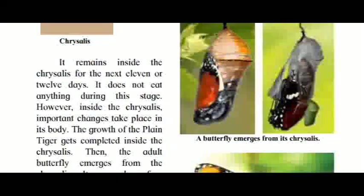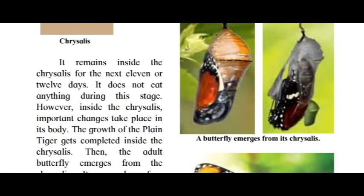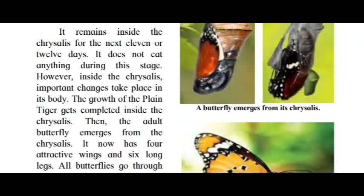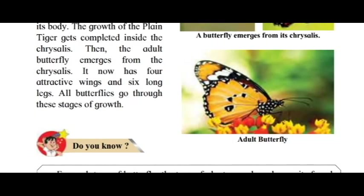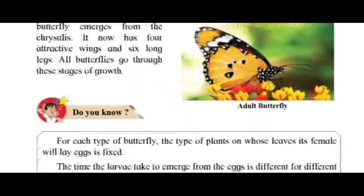The caterpillar remains inside the chrysalis for the next 11 or 12 days. It does not eat anything during this stage. However, inside the chrysalis, important changes take place in its body. The growth of the plain tiger gets completed inside the chrysalis. Then the adult butterfly emerges from the chrysalis — it now has four attractive wings and six long legs. All butterflies go through these stages of growth.